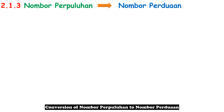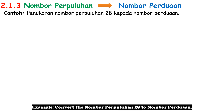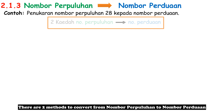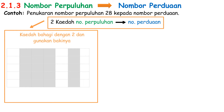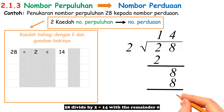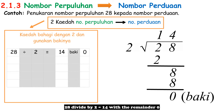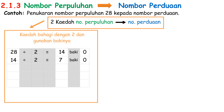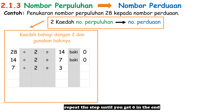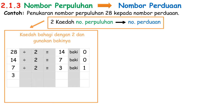Conversion of Nombor Perpuluhan to Nombor Perduaan. Example: convert the Nombor Perpuluhan 28 to Nombor Perduaan. There are two methods. First method — Kaedah Bahagi dengan 2 dan Gunakan Bakinya: 28 divided by 2 equals 14 with remainder 0. Use the value 14 and divide by 2 again — you get 7 with remainder 0. Repeat the step until you get 0.